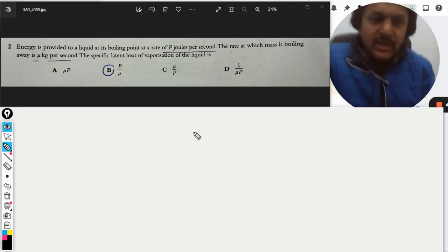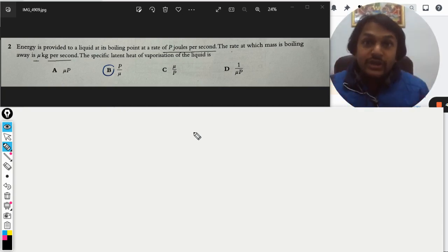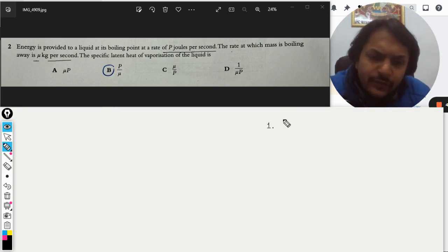Case number one: when you heat, the temperature of the substance rises. That kind of heating is known as sensible heating. Whenever you heat, the temperature of the body rises.